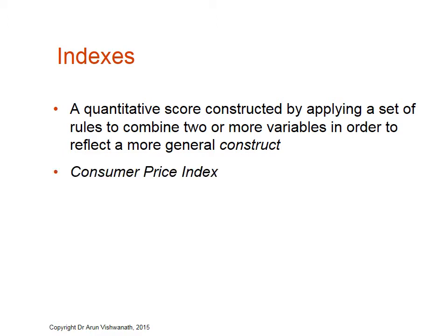In economics you see indexes like the Consumer Price Index and the Big Mac Index. The Consumer Price Index looks at a basket of goods — two or more variables — such as products people purchase in a marketplace. For example, the Federal Reserve in the United States will count essential products like bread, milk, and eggs, and survey their prevailing prices across neighborhoods, regions, and the entire nation to gauge inflation rates — that is, whether things are getting more or less expensive.